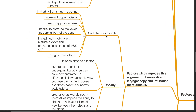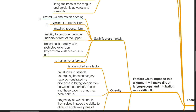Factors which impede this alignment will make direct laryngoscopy and intubation more difficult. Such factors include limited mouth opening of less than 4 cm, prominent upper incisors, maxillary prognathism, inability to protrude the lower incisors in front of the upper, limited neck mobility with restricted extension, thyromental distance of less than 6.5 cm, and sternomental distance of less than 12.5 cm, or a high anterior larynx.